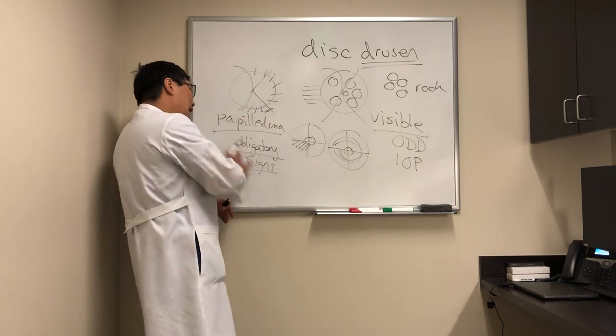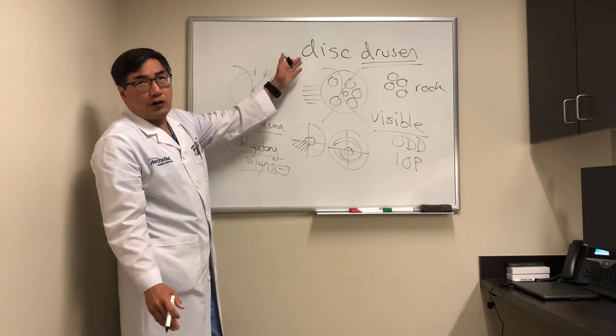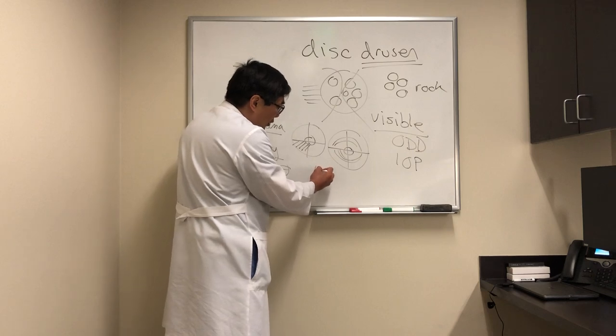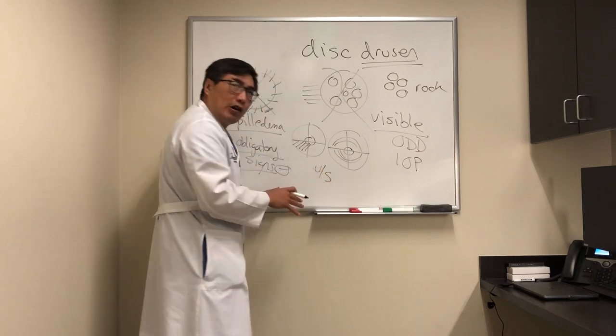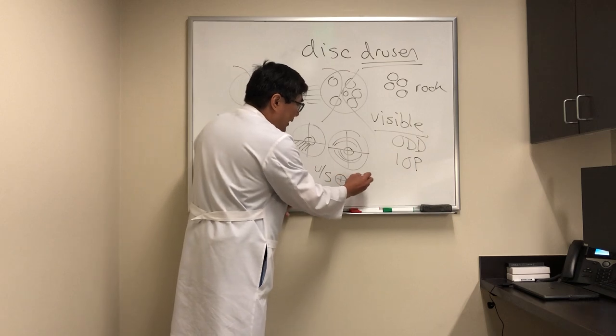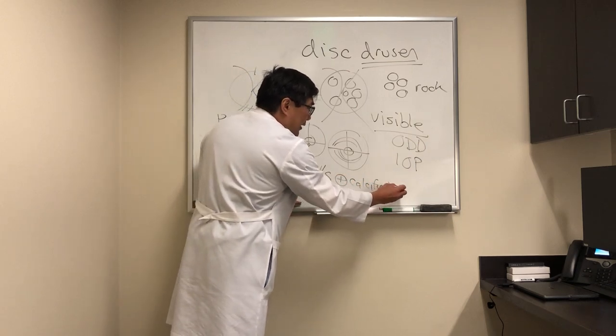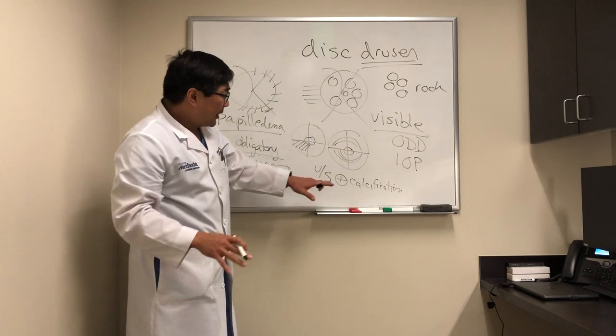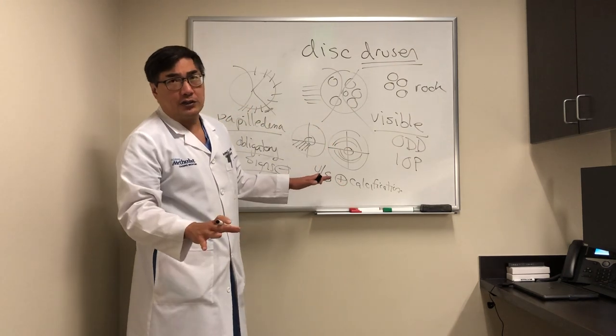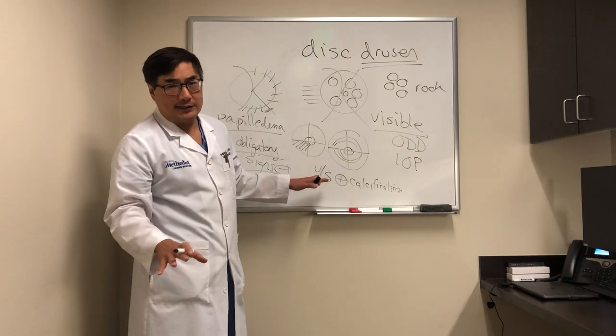Now what if you don't have any obligatory signs and you're still worried it's papilledema? But then you have to do ancillary testing, and the testing that we normally are going to rely upon is ultrasound. And ultrasound is going to be looking for the calcifications that are in the drusen themselves, but it's only helpful if it's positive. So if it's negative, about half the drusen are not calcified, and we cannot see them on ultrasound.